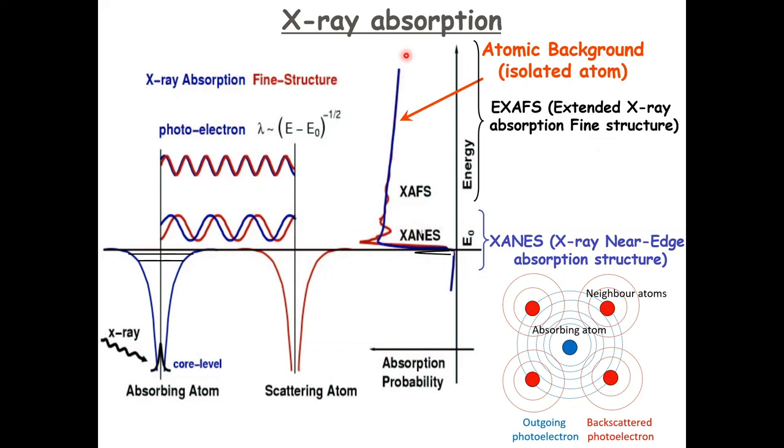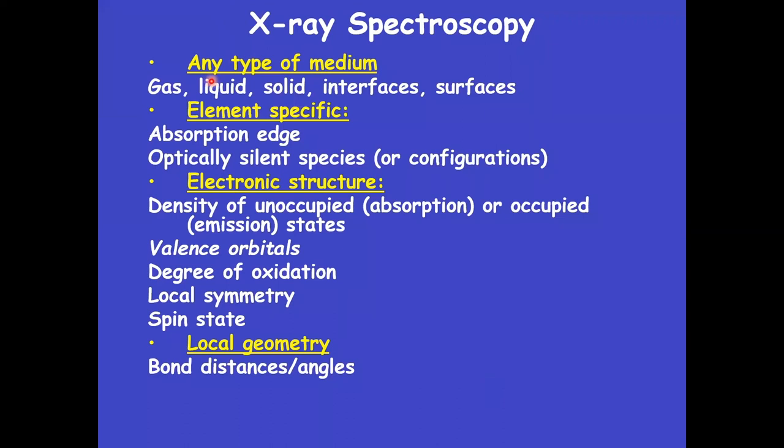You can easily imagine that if the distance between these two atoms changes, then so will the interference pattern. If you subtract the atomic background, you end up with a spectrum in energy space, which you can convert into wave vector space. Wave vectors are the Fourier transform of distances. Therefore, you can get, by an analysis of the XANES and the EXAFS, the radial distribution function around the absorbing atom.